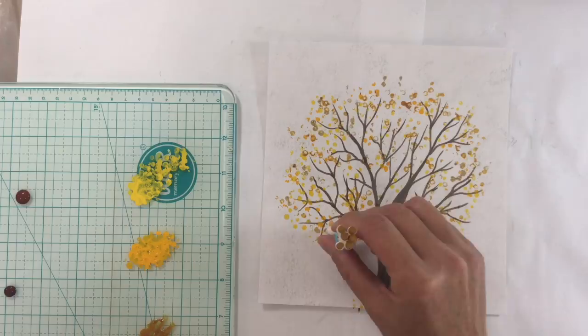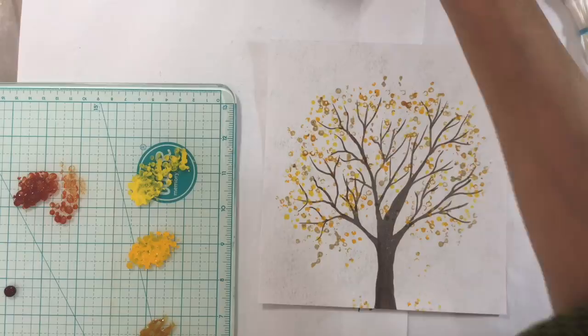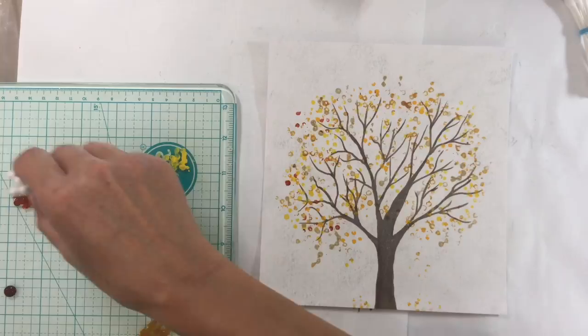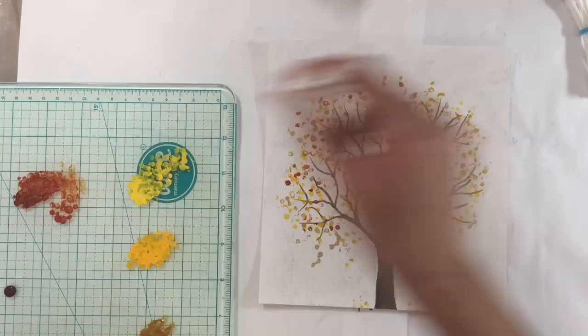Next, I'm adding some quinacridone gold. Again, this is just a really beautiful colour, very autumnal. And again, not forgetting to add some falling leaves as well to the ground and giving the impression that the leaves are falling down.